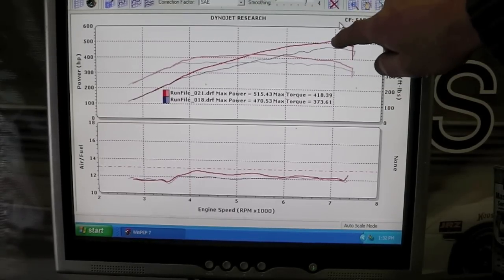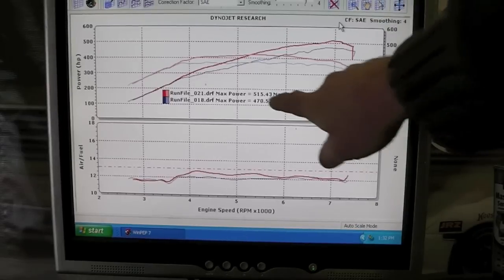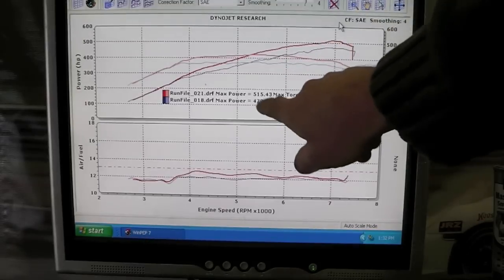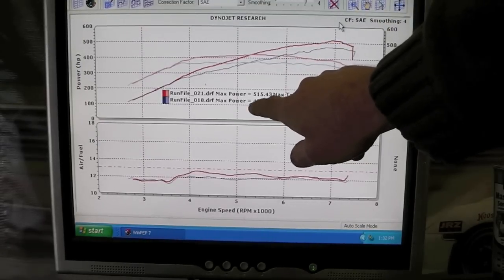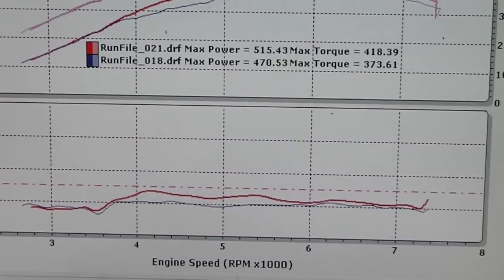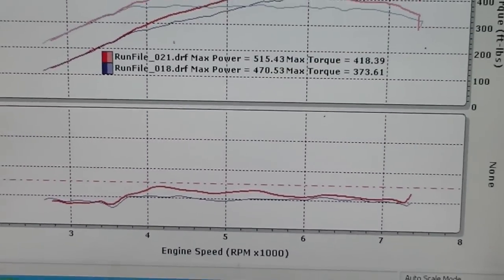But literally at 7 tenths of a bar, so 11 PSI, this car is making 515 to the tire. And then with no boost, without the boost modified at all on pump gasoline, just turning down the power as much as possible, this car is a 470 rear wheel horsepower car.